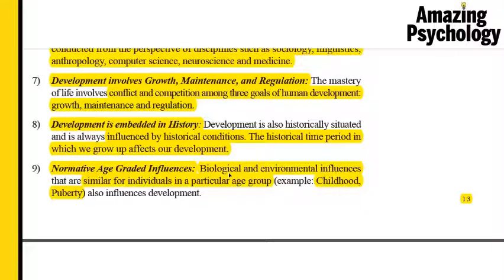Next are normative age-graded influences — 'normative' meaning normal, and 'age-graded' meaning within a specific age. This refers to the normal biological and environmental influences that affect how a person grows at a particular age, which are seen to be similar for all people within the same age group. One example is that all people go through childhood and all people go through puberty — these are common biological occurrences for all human beings.